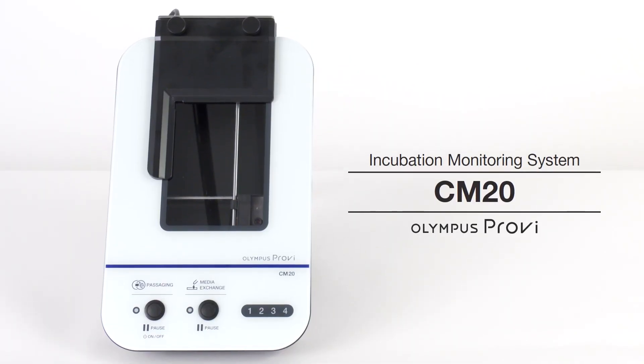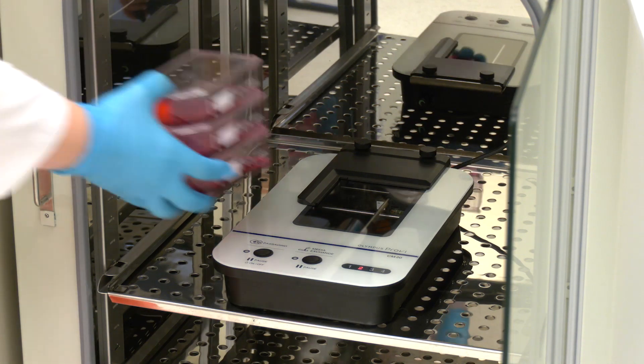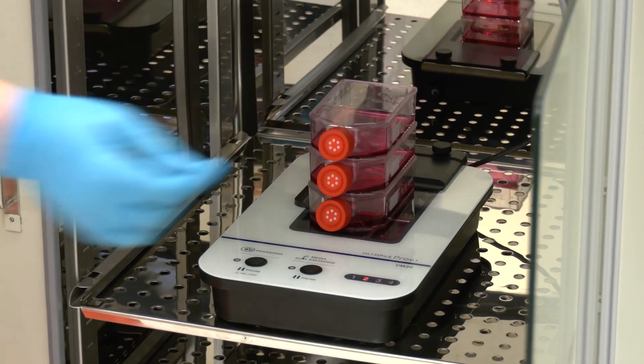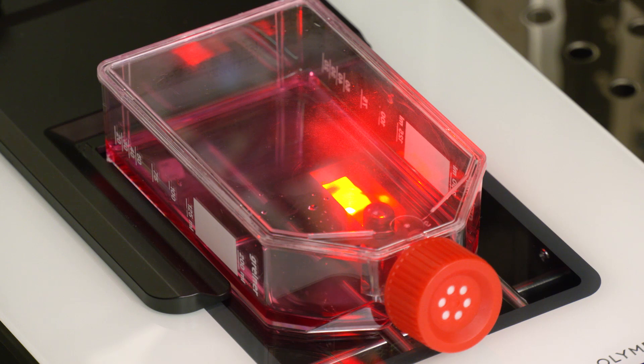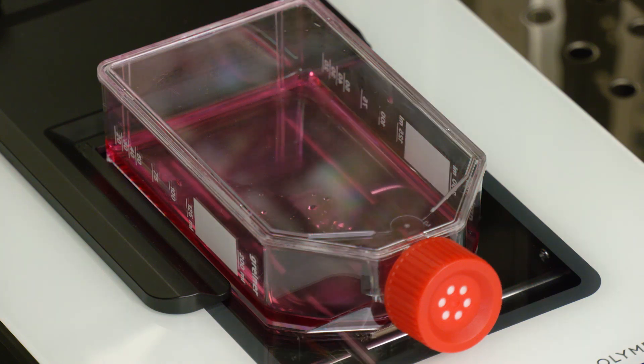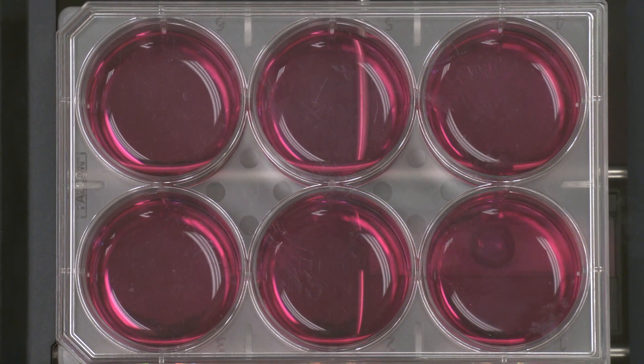The CM20 monitor can simplify this workflow and lead to a more consistent result, saving both time and money. Just place the imaging head and the cultures in the incubator and the system will remotely image, do cell counts, and determine the confluency. With the CM20 monitor, there's no need to label, stain, detach, or even remove the cultures from your incubator.